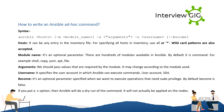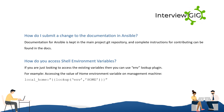How do I submit a change to the documentation in Ansible? Documentation for Ansible is kept in the main project git repository, and complete instructions for contributing can be found in the docs. How do you access or show environment variables? If you are just looking to access existing variables, you can use the env lookup plugin. For example, accessing the value of the home environment variable on the management machine: local_home: "{{ lookup('env', 'HOME') }}".